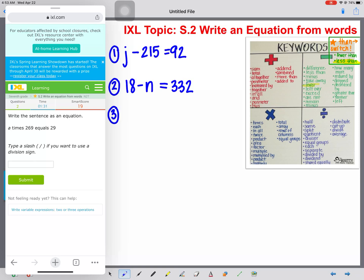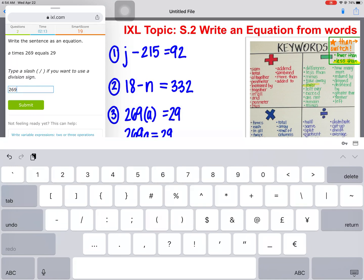A times 269 equals 29. Okay, so for multiplication, now that we're in seventh grade in algebra, we do not want to use an X for multiplication, but we want to use parentheses. So we're going to take 269 times A equals 29. Now, we don't need our parentheses because we have a variable right there, and we know that a number times a variable is just going to be represented like so. So 269A equals 29.